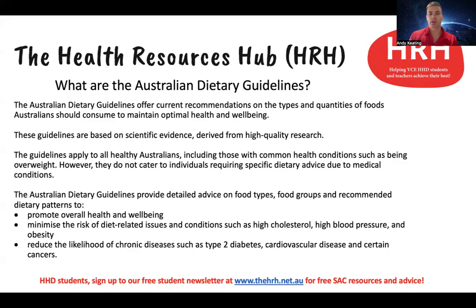The guidelines also provide detailed advice on food types, food groups, and recommended dietary patterns — not only to promote overall health and wellbeing, but to minimise the risk of diet-related issues and conditions. It gives examples including high cholesterol, high blood pressure, obesity, and also to reduce the likelihood of chronic diseases such as type 2 diabetes, cardiovascular disease, and certain cancers.